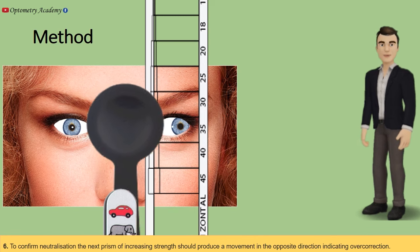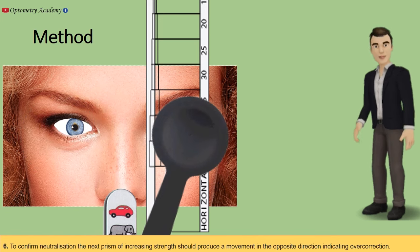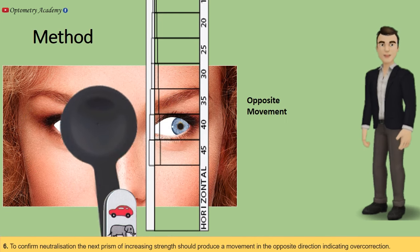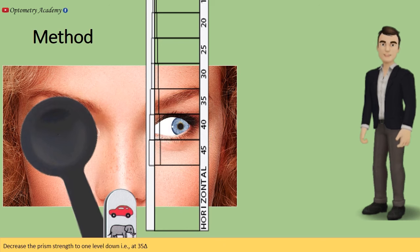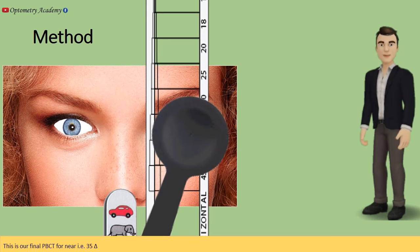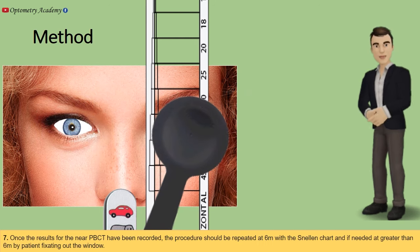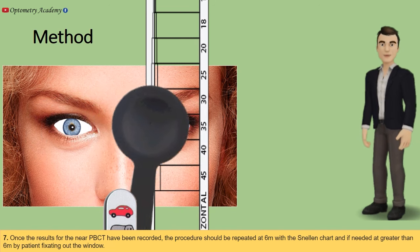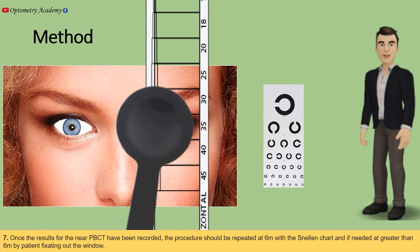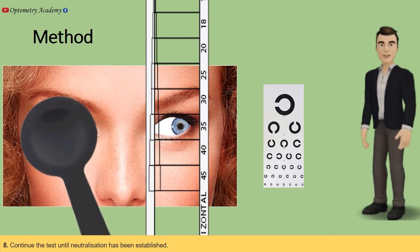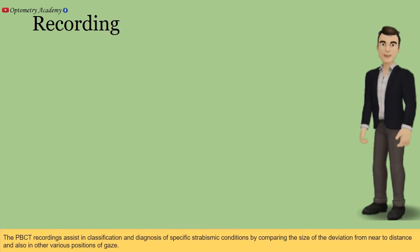To confirm neutralization, the next prism of increasing strength should produce a movement in the opposite direction, indicating over-correction. Decrease the prism strength to one level down — in this example, 35 prism diopters — which is our final PBCT result for near: 35 prism base in. Once the results for the near PBCT have been recorded, the procedure should be repeated at 6 meters with the Snellen chart, and if needed at greater than 6 meters by having the patient fixate out the window. Continue the test until neutralization has been established.